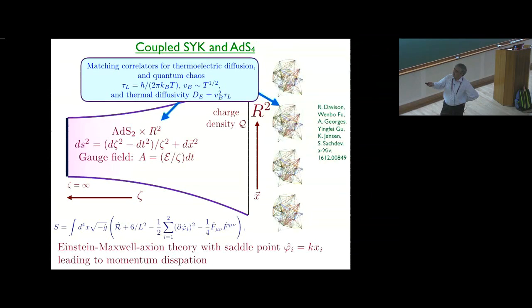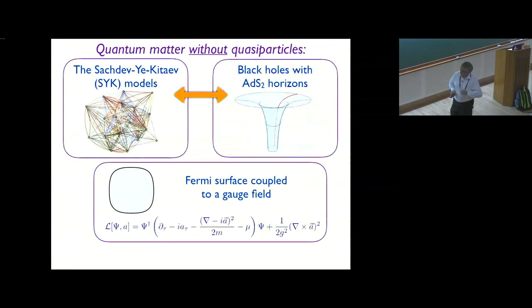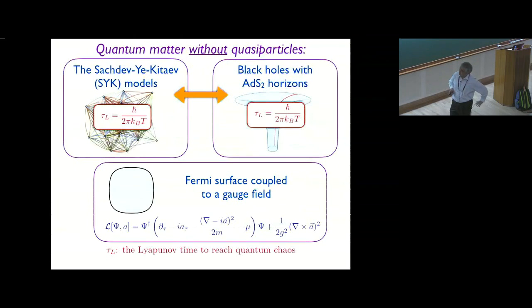This is a very useful relation for a condensed matter physicist, at least for a theorist, because the left-hand side is something you can measure. The right-hand side are quantities associated with scrambling. So the whole idea now is that ideas from scrambling are what you need to replace quasi-particles to understand transport. I'm hoping that idea is going to lead to more progress.